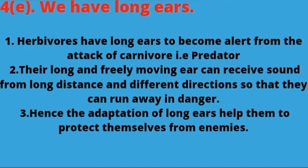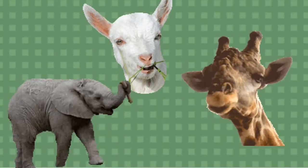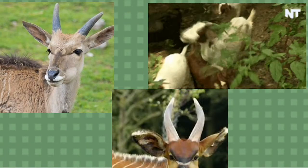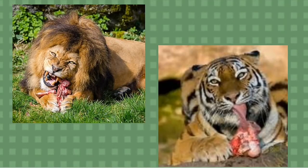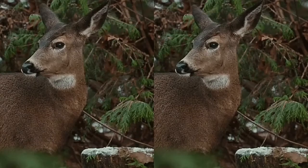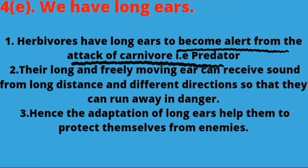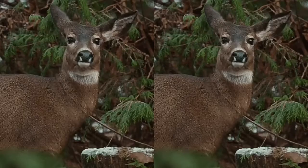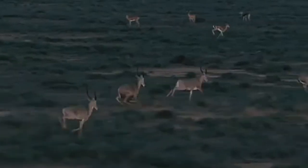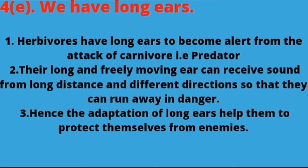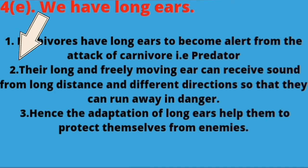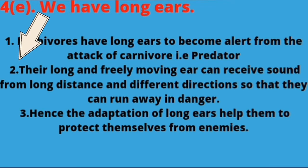Next statement: we have long ears. Why do animals have long ears? Herbivores have long ears so that they can be alert if they are attacked by carnivores. Answer: (1) Herbivores have long ears to become alert from attack of carnivores, that is predators. (2) The long and freely moving ears can receive sound from long distances and different directions so that they can run away in danger. Hence, the adaptation of long ears helps them to protect themselves from enemies.